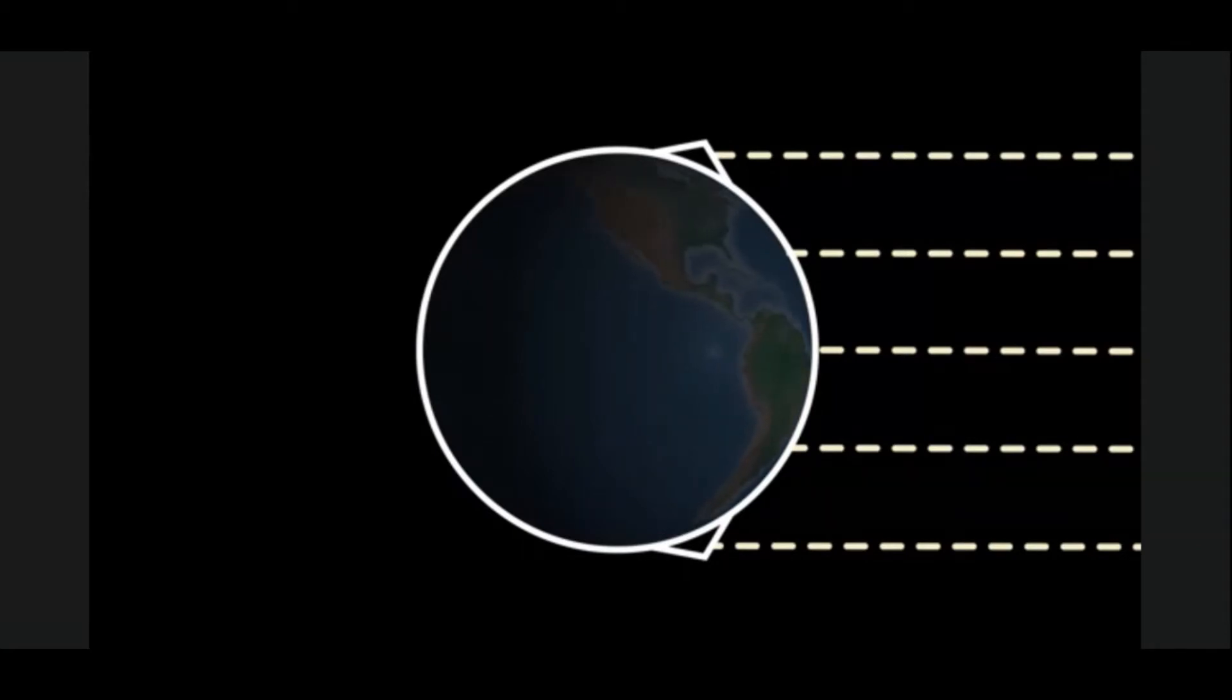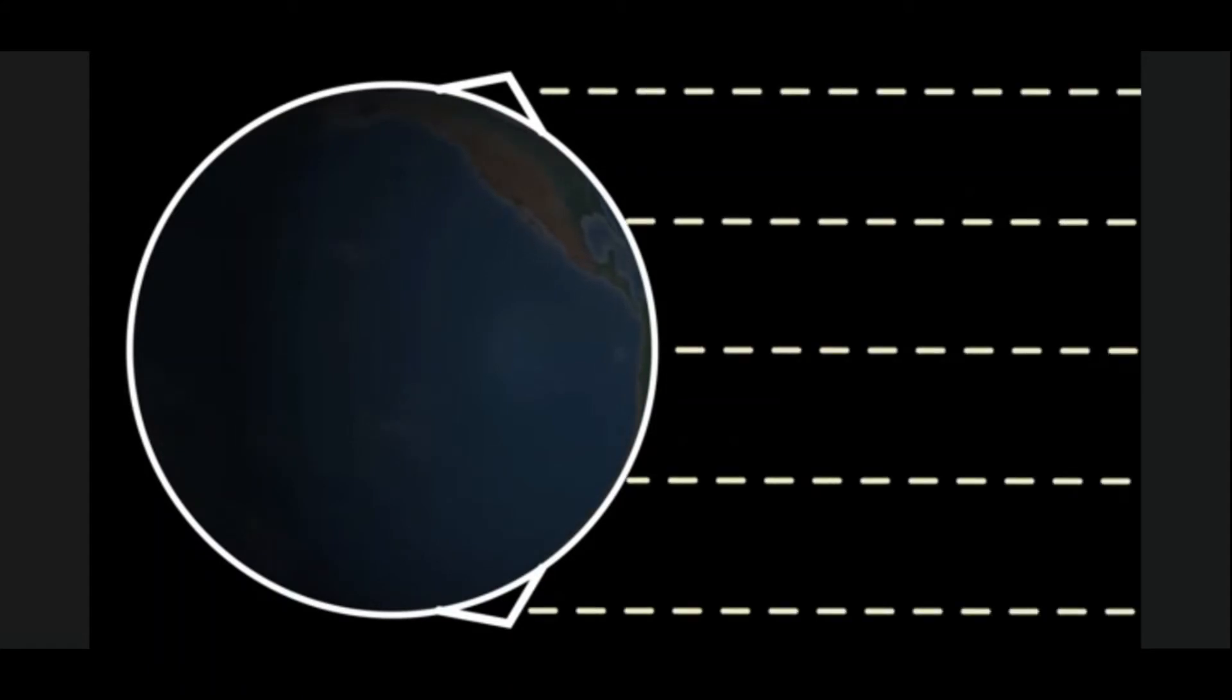Slope angle also influences the amount of solar radiation received on mountains. Maximum solar radiation is received when mountain slopes are perpendicular to the sun's rays.